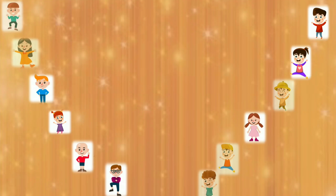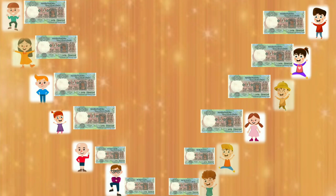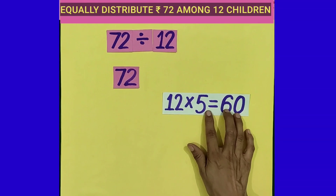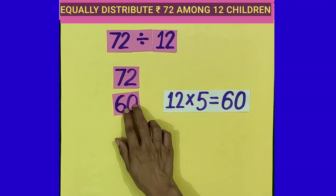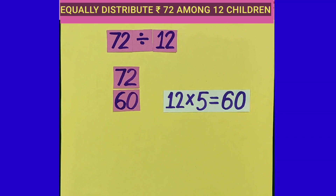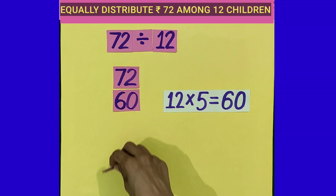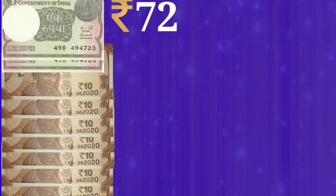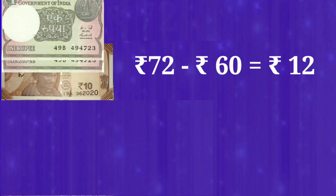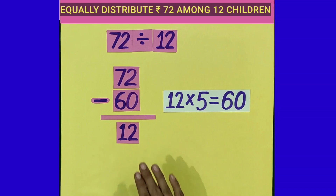Now students, we can give one 5-rupee note to each one of them. And likewise, how much amount have we distributed? As you know, 12 times 5 is equal to 60. So we have distributed 60 rupees. And how much amount are we left with? For this, we'll subtract rupees 60 from rupees 72. 72 minus 60 is equal to 12. So we are left with 12 rupees.